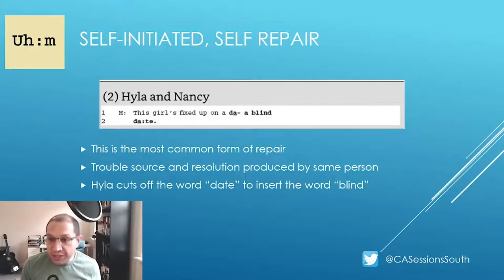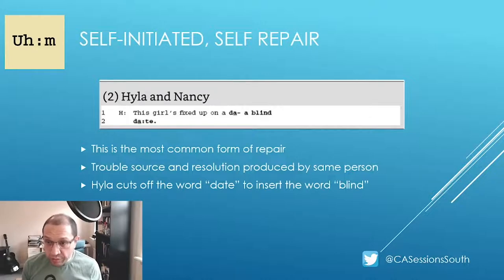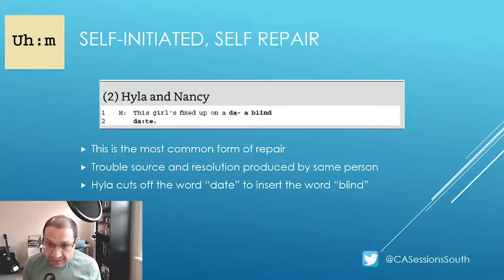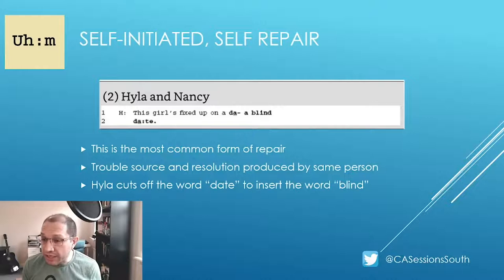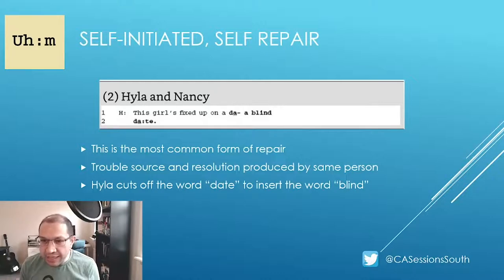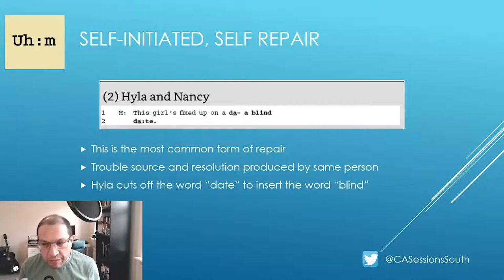Here's an example of self-initiated, self-repair. The current speaker, during a turn in progress, places on hold the progression of their own turn to address a trouble source. In this example, it's in the repair solution that we see the apparent problem with the initial formulation. The initial formulation of 'fixed up on a date' is not erroneous as such, but the insertion of 'blind' is an on-the-fly self-correction that fine-tunes this turn in progress with minimal disruption to the progressivity of this sequence.